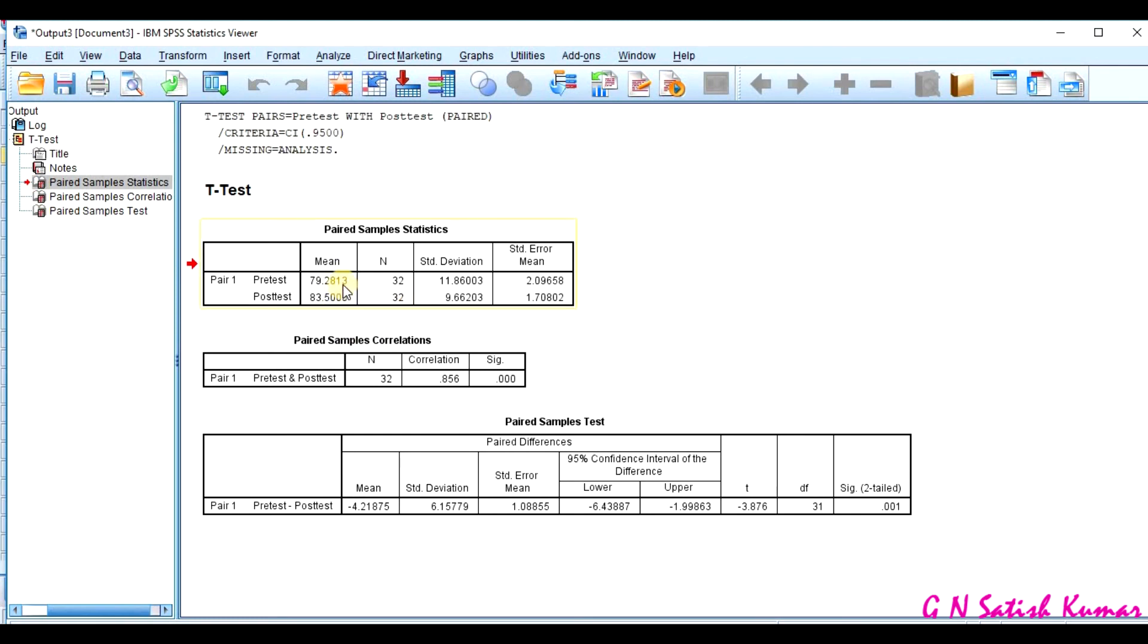Now, is there any difference between pre-test and post-test? To do this, I need to check the significance value in the second table, which is called Paired Sample Correlation and Paired sample test, where we need to check the significance values here. The significant value is 0.001.